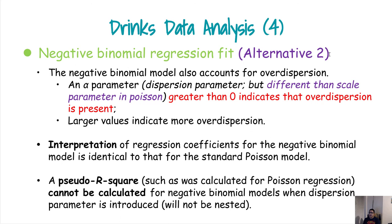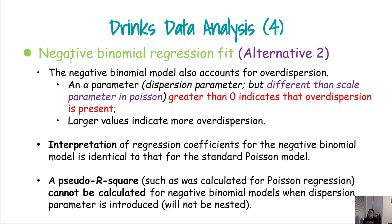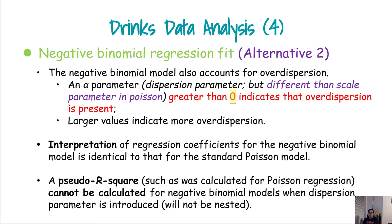An alternative to the overdispersed Poisson is the negative binomial regression, which already has two parameters, one representing overdispersion. The scaling difference is that in the overdispersed Poisson model the null (equidispersion) value of the dispersion parameter is 1, whereas in the negative binomial the null value is 0 (the alpha parameter). Everything else is the same — interpretation of the negative binomial model is exactly the same as the standard Poisson model. We do not call it 'overdispersed' negative binomial because overdispersion is already built in.